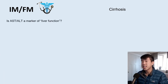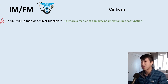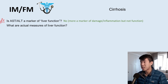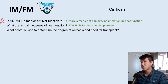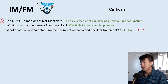AST and ALT are markers of liver damage and inflammation, not function — even though we call it a liver function test. Actual markers of liver function are PT/INR (the liver makes coagulation factors), bilirubin, albumin, and platelet level. The MELD sodium score determines degree of cirrhosis and need for transplant — a score greater than 15 is when you start thinking about transplant.